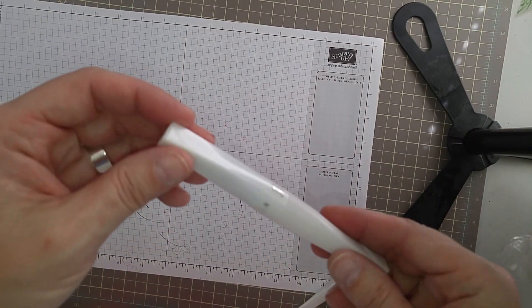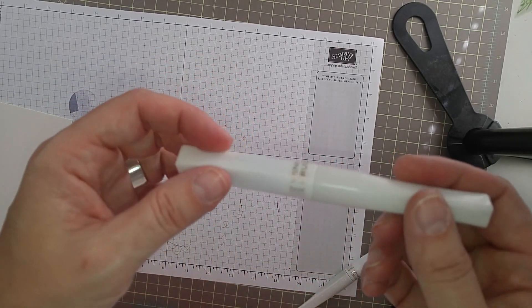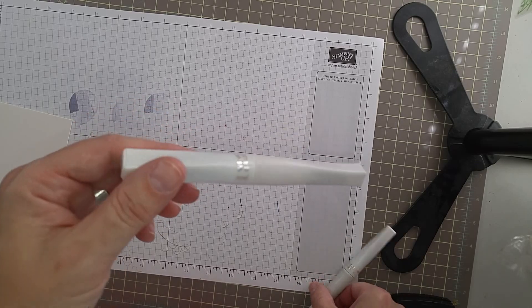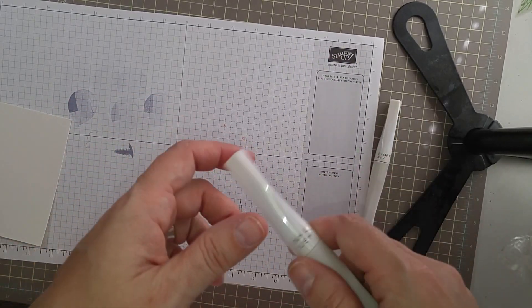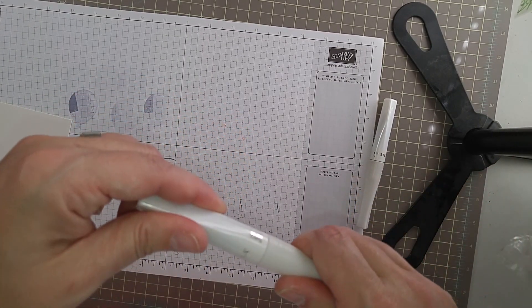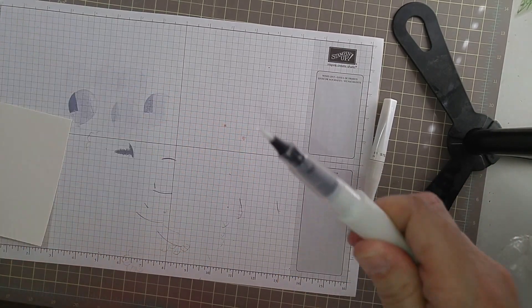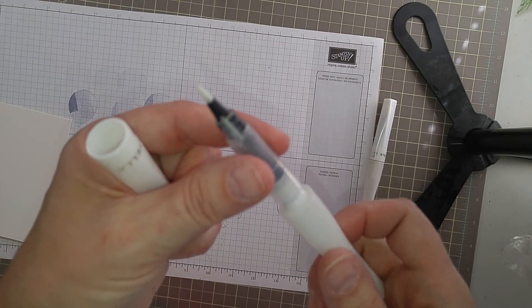And this is the Wink of Stella Brushed Clear. It is in the Occasions Catalog and I love it so much that I've blown through two of them already. It's very shimmery. It's not like a glitter that'll come off if you haven't ever used it before. If you have used it before then you know how addicting it can be. But my point in this video is to tell you that you can refill it.